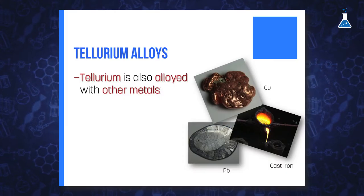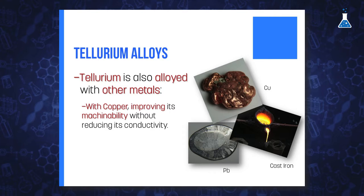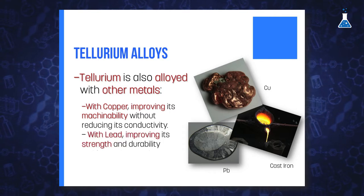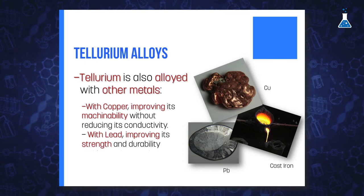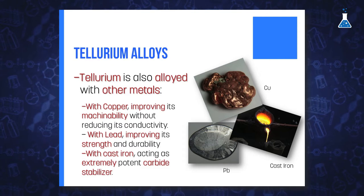Tellurium has also been used as an alloying element with other metals, such as copper to improve its machinability without reducing its conductivity, with lead improving its strength and durability, or with cast iron where it can act as an extremely potent carbide stabilizer.